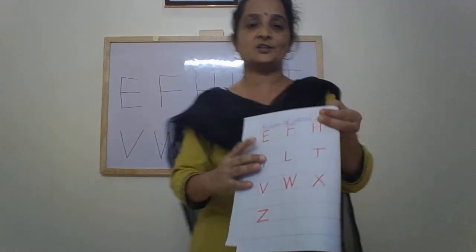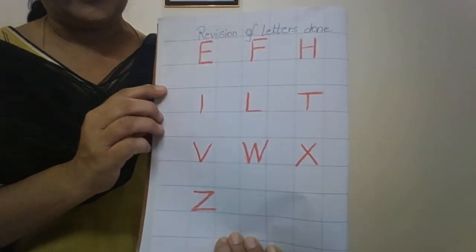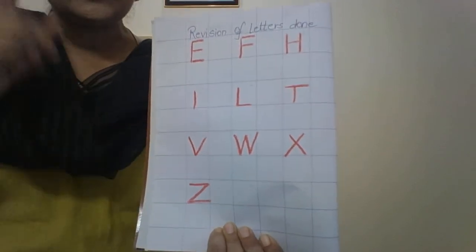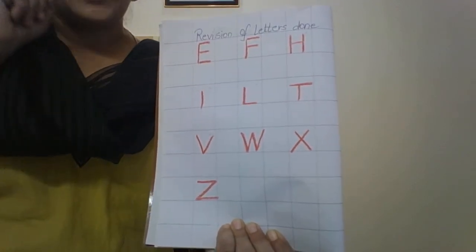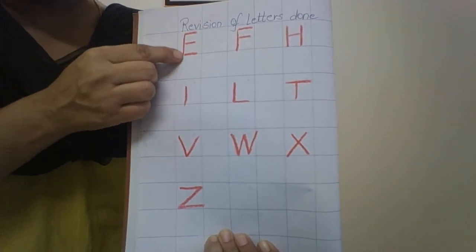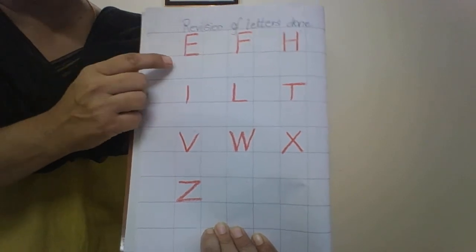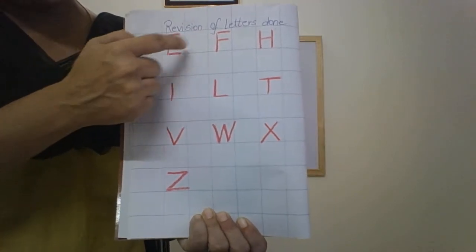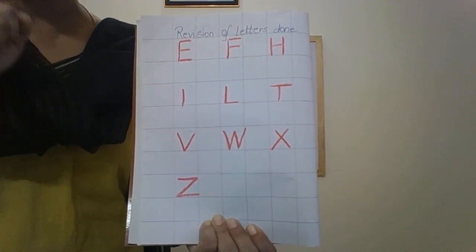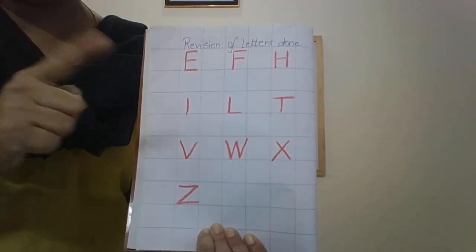See children, in the notebook, in alternate squares, you have to say the letters loudly and then write. For example: standing line, sleeping line on top, sleeping line in the middle, sleeping line down — letter E. So for every letter that you write, you will say loudly the formation as well, and write them in alternate squares.